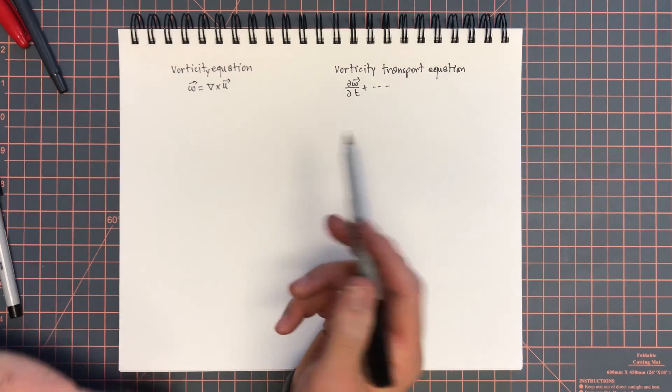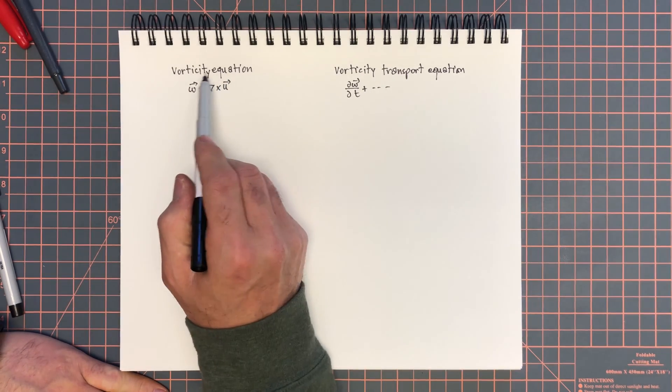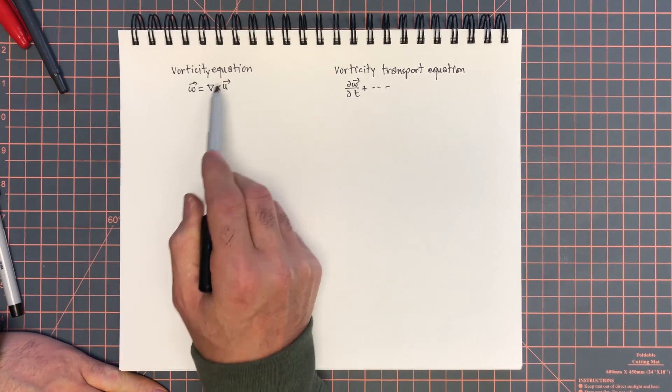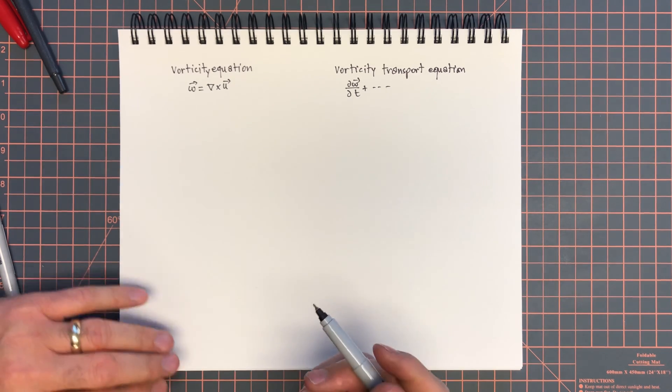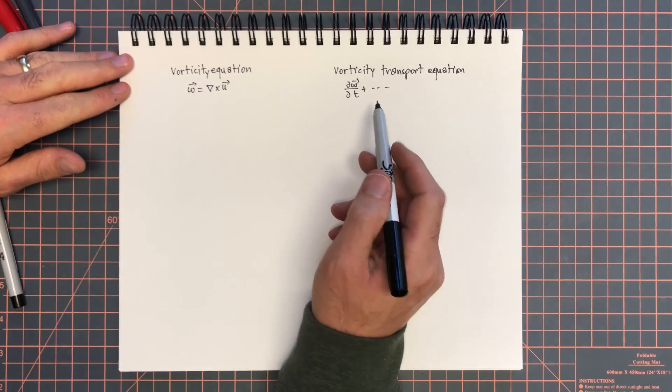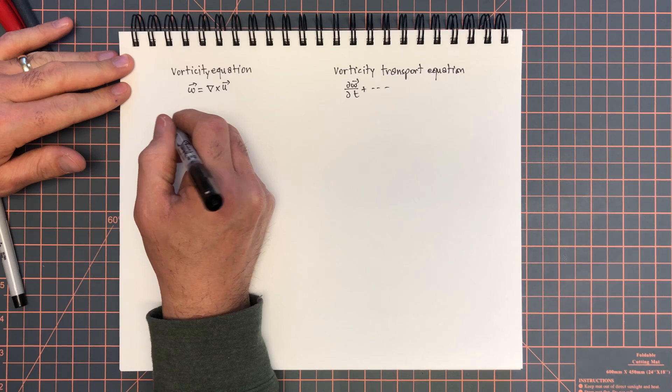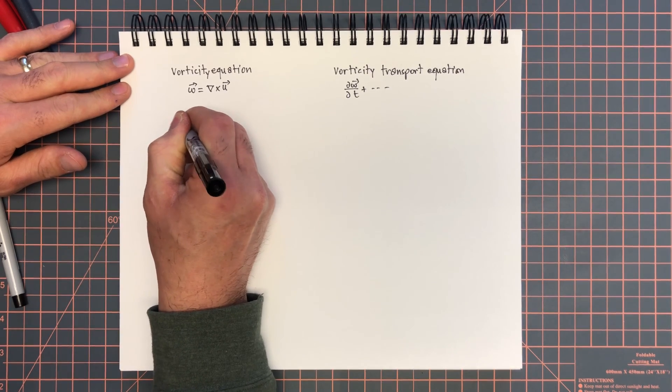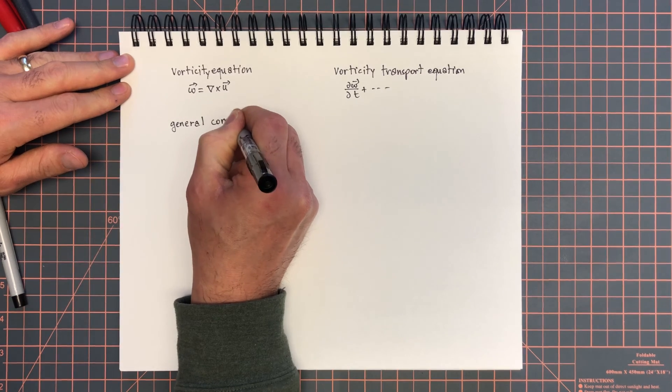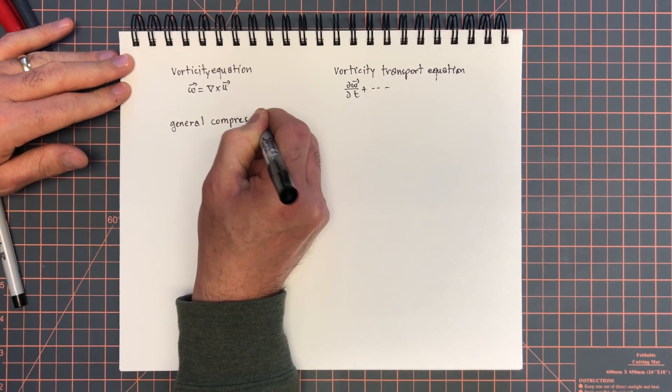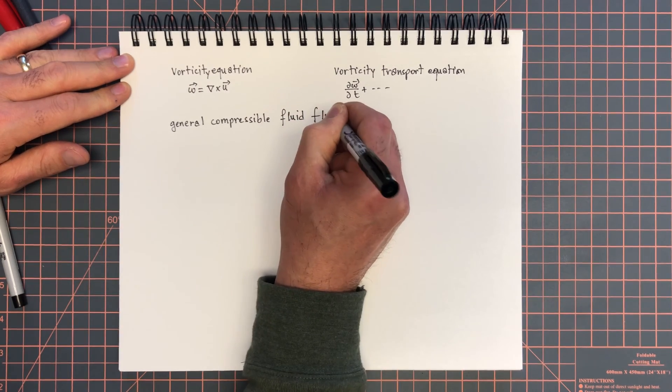Now, many will confuse the two. Even the Wikipedia website puts this equation as the vorticity equation. In my opinion, that's technically incorrect. So how do we derive the vorticity transport equation? We are going to consider the general case, general compressible fluid flow.